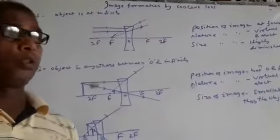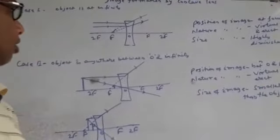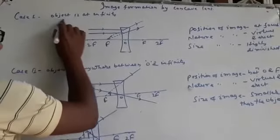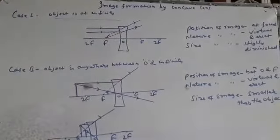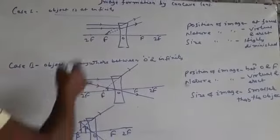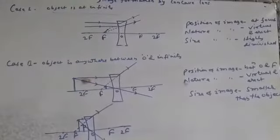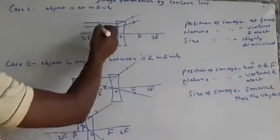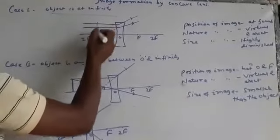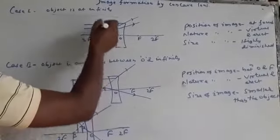First of all, we have to see ray diagram of case number 1. If object is at infinity, you know from infinity, parallel rays come. So I have taken a concave lens and two parallel rays coming from infinity. These rays are parallel to the principal axis and parallel themselves also.